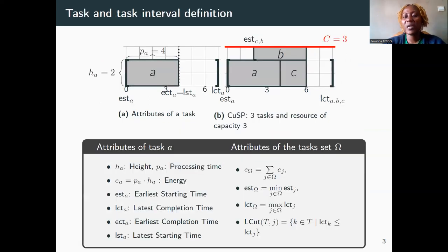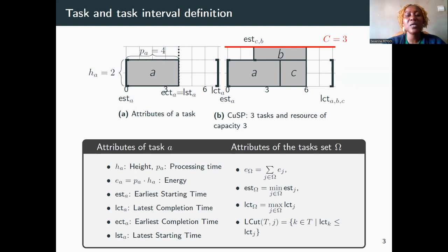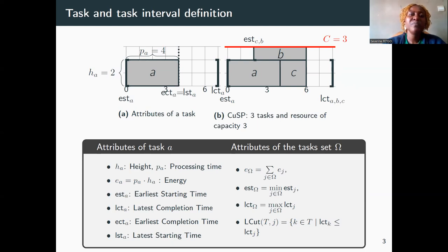Let's start with some notation. What is a task? Figure A represents a task and its attributes. A task is a rectangle where the vertical side represents the height, the horizontal side the processing time, and the area the energy. Each task executes between its earliest starting time and its latest completion time.